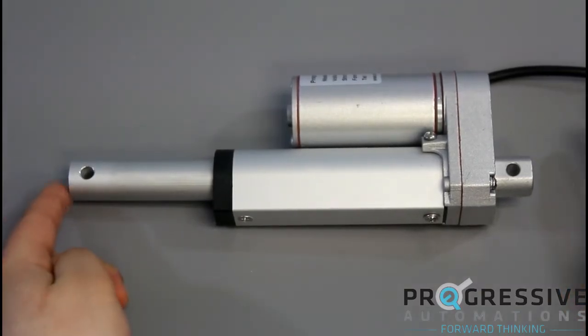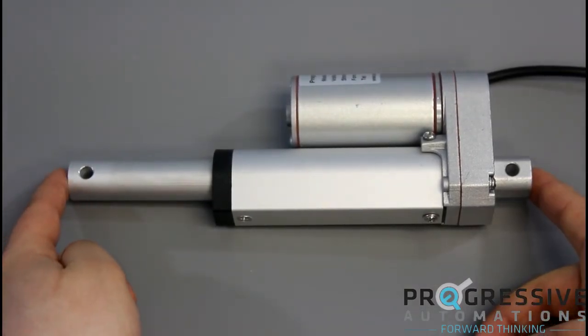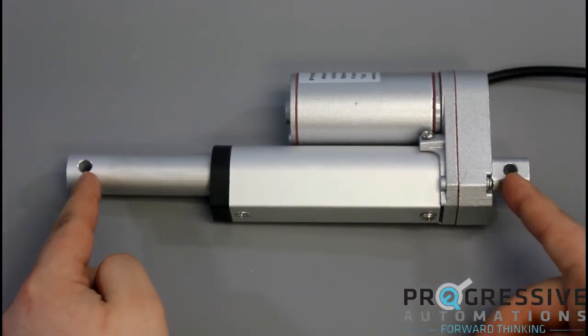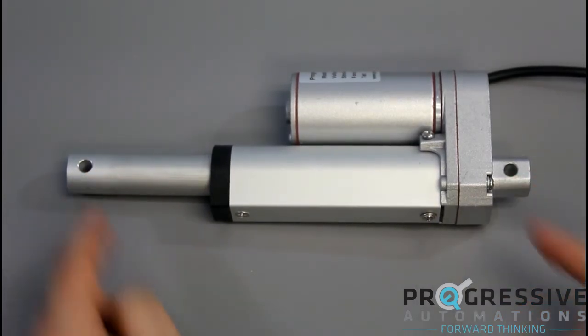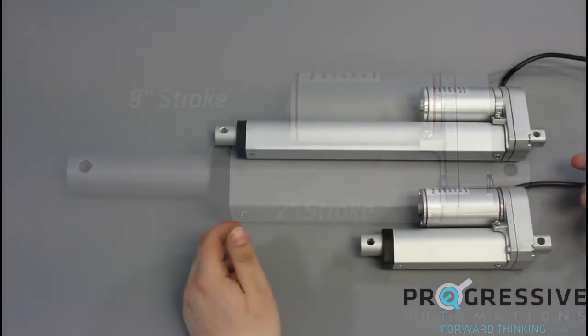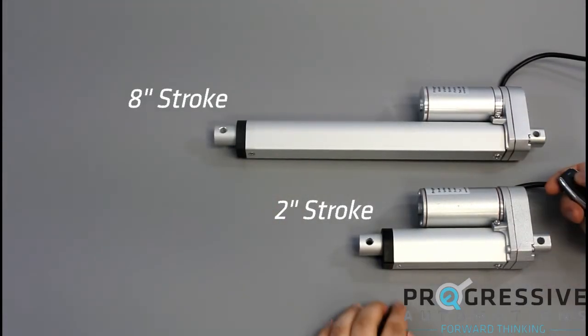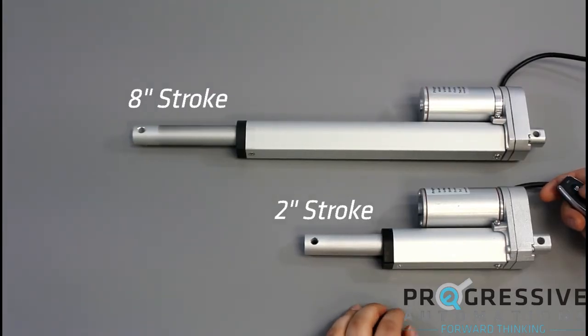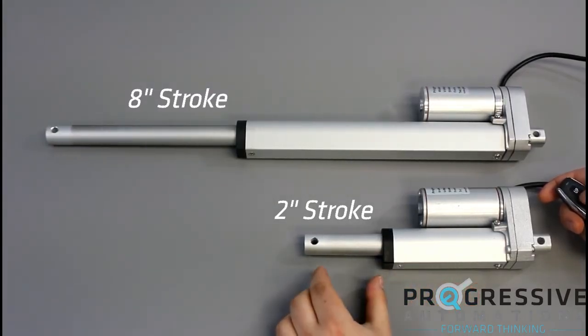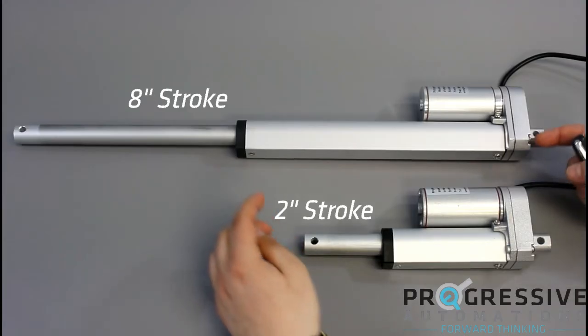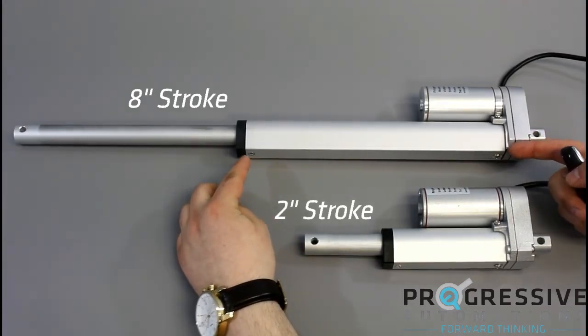The actuator's dimensions can be quantified with two measurements: end to end length and mounting hole to mounting hole length. It's important to note that as the stroke size of the unit increases, the size of the body increases as well. We can see that the size of the stroke and the size of the body are proportional.